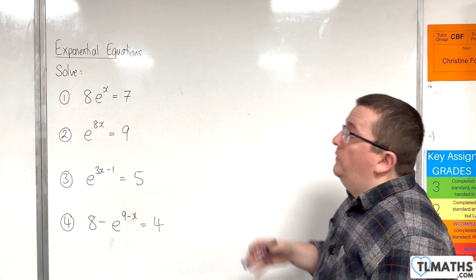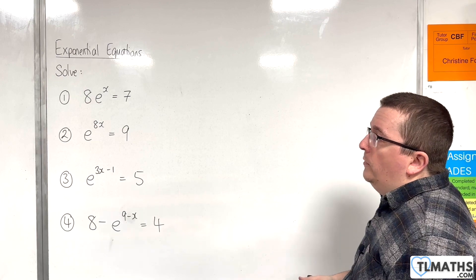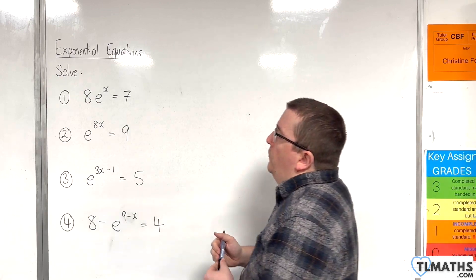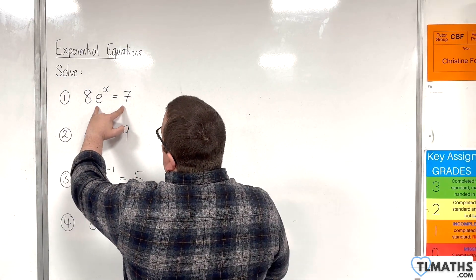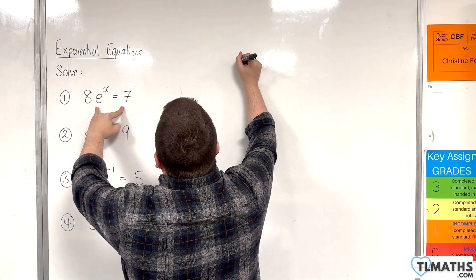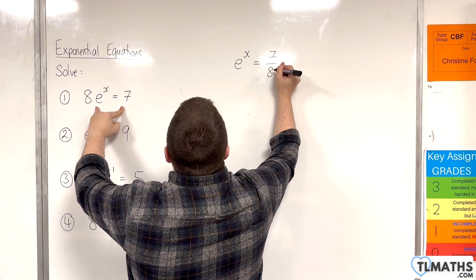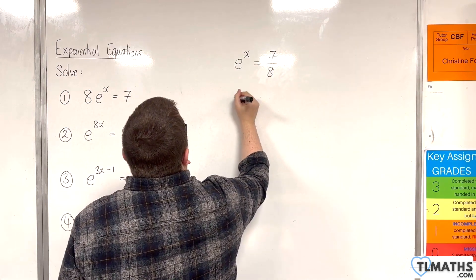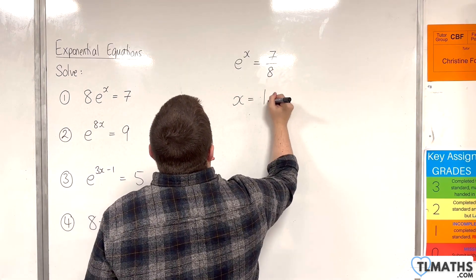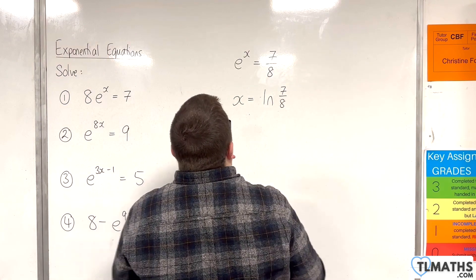In this video, I want to solve these exponential equations in terms of e. The first one: we have 8e^x = 7. The first thing you want to do is divide both sides by 8. Then you can go straight from exponential form to logarithmic form. So x is the natural log of 7 over 8.